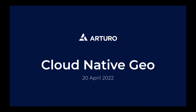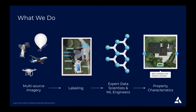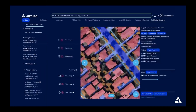I'm going to be talking about how we're using cloud-native geospatial technologies at Arturo. What Arturo does is relatively straightforward: we take unstructured, typically raster data from multiple sources, label all of that data, and we have an entire side of the company that builds machine learning models. We run these models to get structured property characteristics that we sell to customers — typically insurance carriers — to help them make better data-driven decisions.